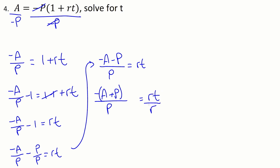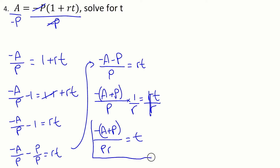And now what we can finally do is divide by the r. So I'm going to write this first as minus a plus p, factoring out the minus, over p is equal to rt, and we're dividing by r on this side. I'm going to rewrite that as multiplying by one over r on the left. Remember that dividing by something when you're dealing with fractions is the same as multiplying by the reciprocal. Multiplying straight across, we have this term up top multiplied by one, and in the bottom p times r, so we get minus a plus p over pr is equal to t. And that is our final answer.